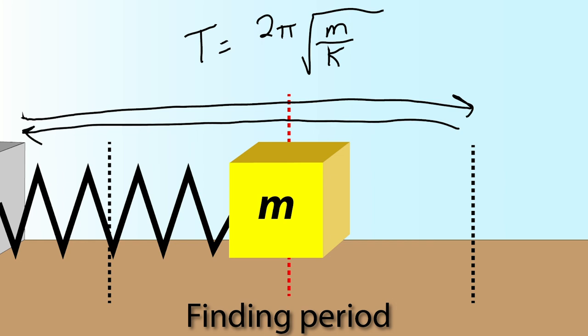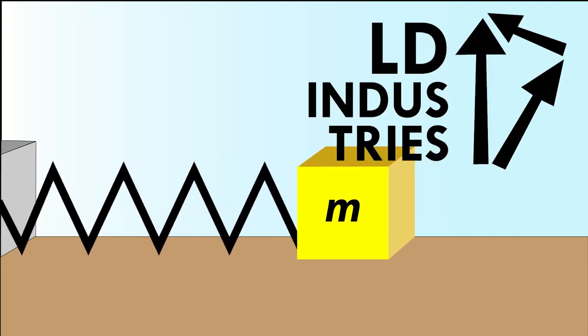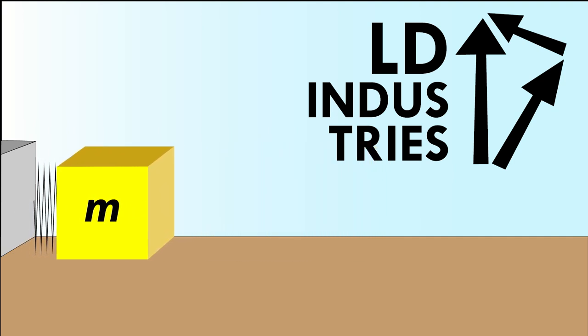Using these three equations, we can analyze the physics of any horizontal or vertical mass spring system, which is a great example of simple harmonic motion. Check out some of these other videos about simple harmonic motion, and for more help on the topic, check out my website, ldindustries.ca.